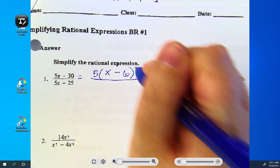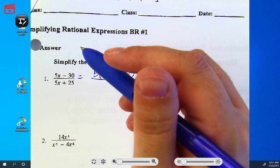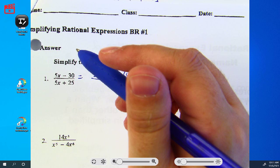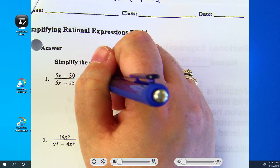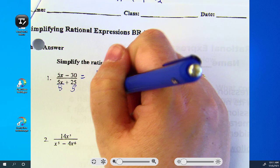When you go to the bottom, is there a GCF? Is there a GCF? Yes, it's again 5. So you divide everything on the bottom by 5, you get x plus 5.